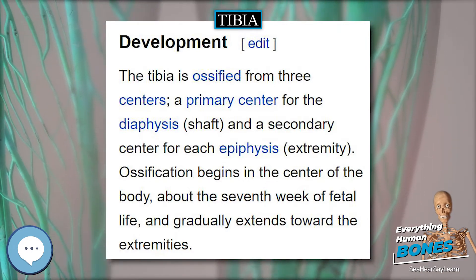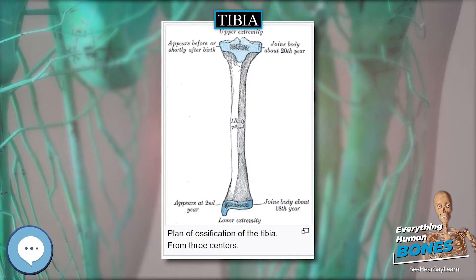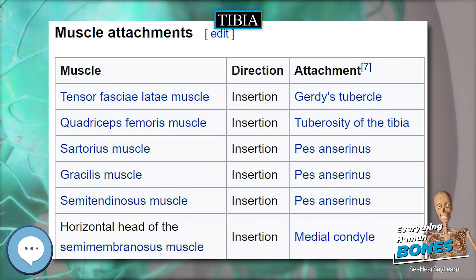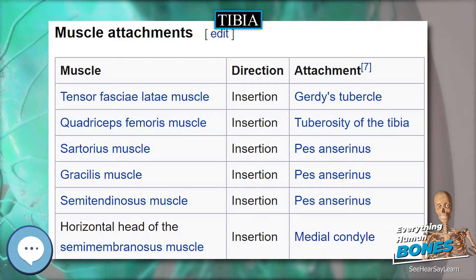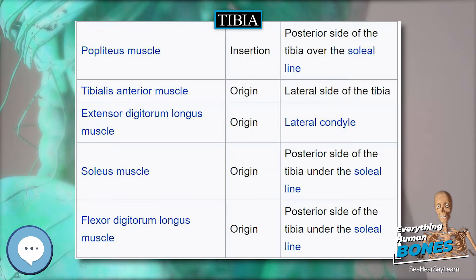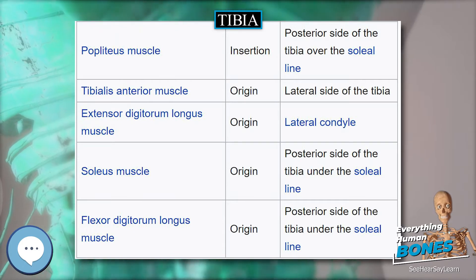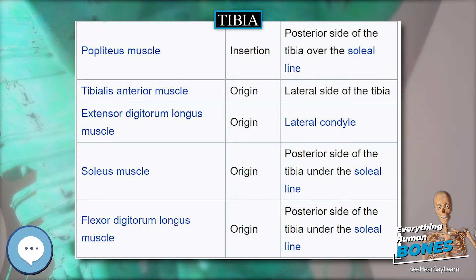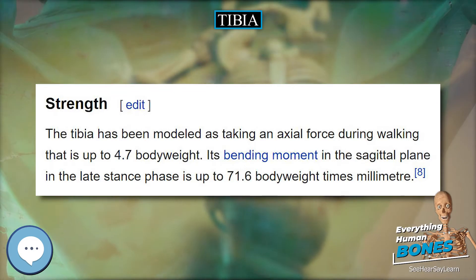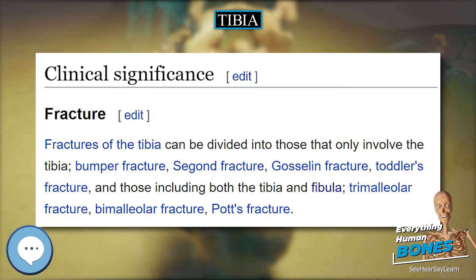Intercondyloid eminence. Between the articular facets in the intercondylar area, but nearer the posterior than the anterior aspect of the bone, is the intercondyloid eminence, or spine of tibia, surmounted on either side by a prominent tubercle, onto the sides of which the articular facets are prolonged. In front of and behind the intercondyloid eminence are rough depressions for the attachment of the anterior and posterior cruciate ligaments and the menisci.